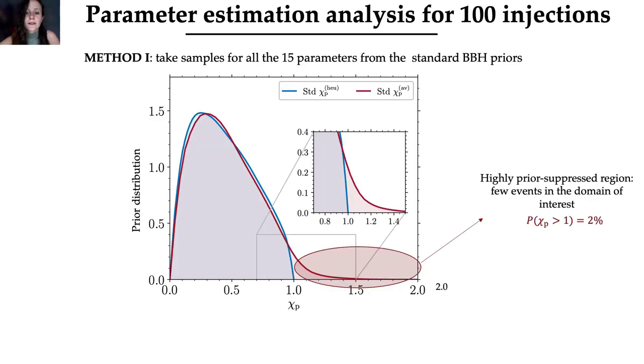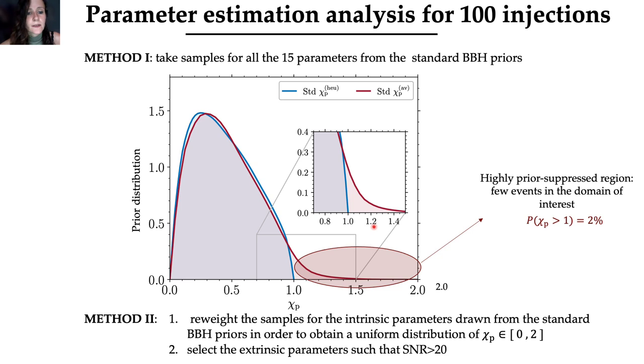The next step is to repeat the same analysis to study the statistical properties that emerge from a larger number of injected signals. But how do we create our ensemble of events? One possibility is to take samples for all the 15 parameters from the standard and informative priors. But if we look at the red curve in this plot that represents the prior distribution for the average χp, we notice that the two-spin region where χp is greater than one is highly prior suppressed. So sampling directly from the priors would prevent us to study the region of interest because most of the events will be placed in the region where only one of the two spins is dominating. So what we did is selecting samples for the intrinsic parameters from the standard and informative prior in order to obtain a uniform distribution of χp between 0 and 2. And then since the spin precession effects are subdominant in the waveform, we selected the extrinsic parameters considering only the sources that have a network SNR greater than 20.